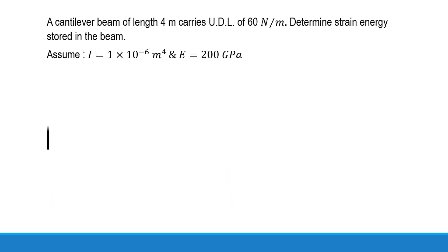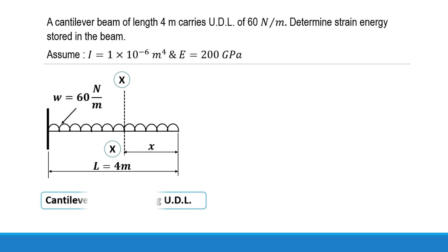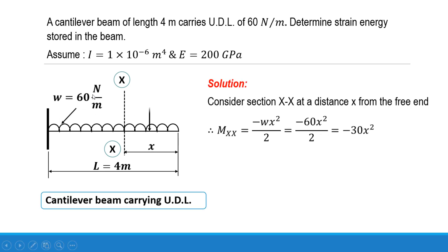The arrangement of the beam is as shown over here. We have drawn the cantilever beam carrying uniformly distributed load. The span length is 4 meters and the UDL is 60 N per meter.